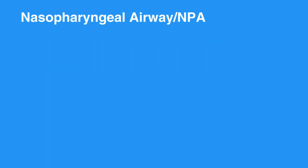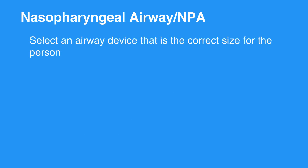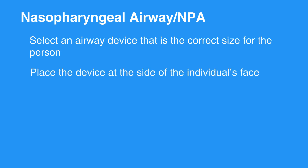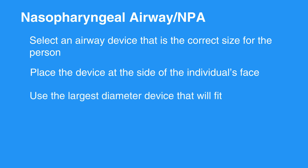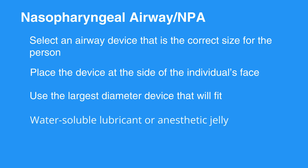To insert a nasopharyngeal airway, or NPA, select an airway device that is the correct size for the person. Place the device at the side of the individual's face. Make sure to choose a device that extends from the tip of the nose to the earlobe. Use the largest diameter device that will fit.